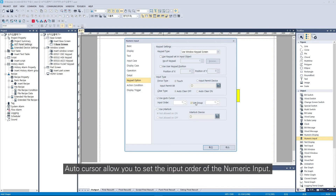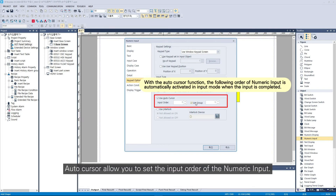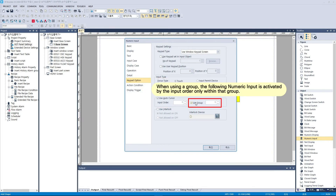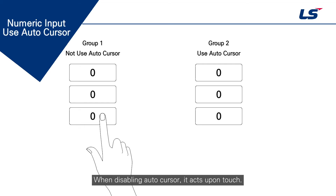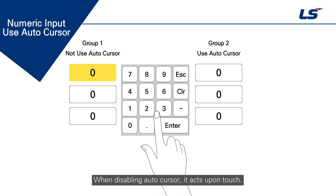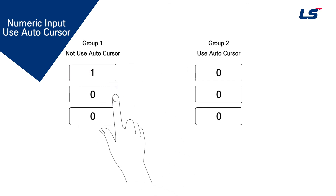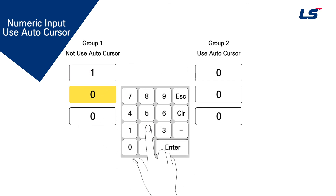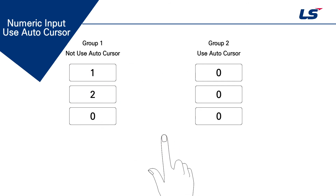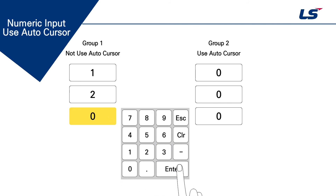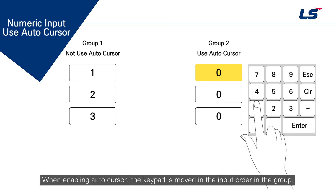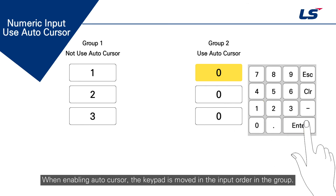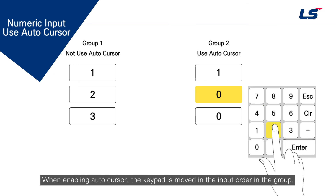Autocursor allows you to set the input order of the numeric input. When disabling Autocursor, it acts upon touch. When enabling Autocursor, the keypad is moved in the input order in the group.